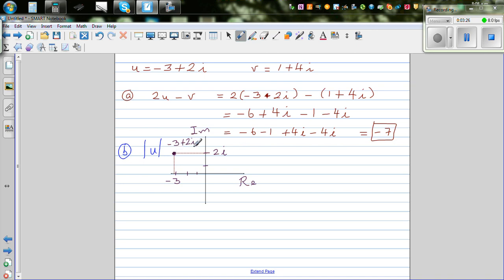You want to find the radial distance. What they're asking is: what is the distance from the origin to this point? That is the modulus of u. You can use Pythagorean theorem. This distance is 3 and this is 2. So u squared is 3 squared plus 2 squared, which is 9 plus 4, which is 13.